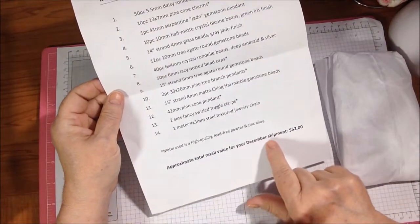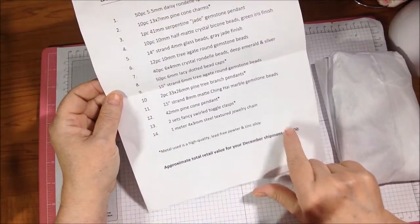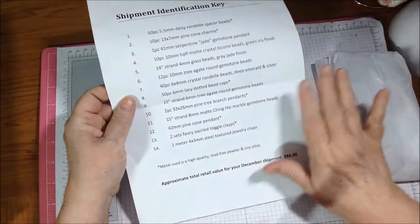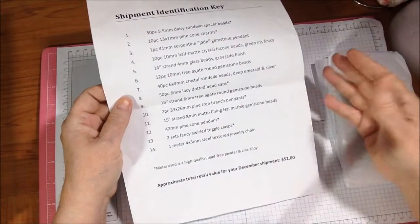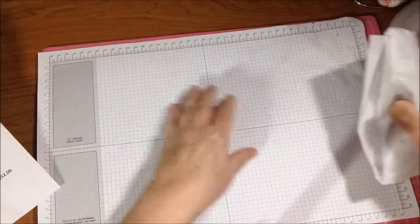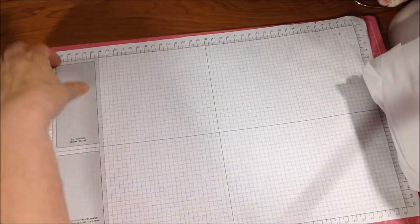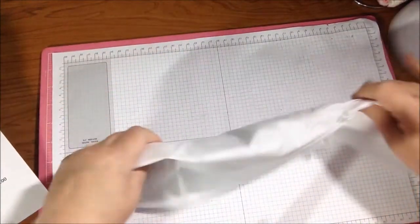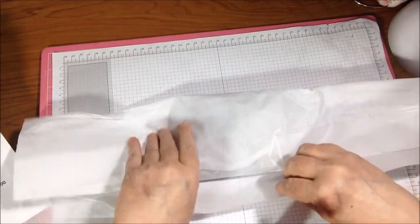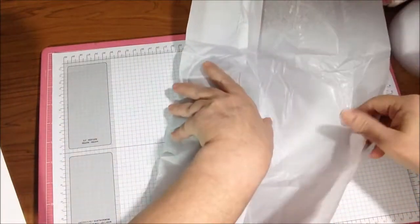Approximate total retail value for your December shipment is $52. And like I've said in the past, I have found that to be an appropriate approximation. I don't check it every month - I've checked it a few times and it was definitely valued at that or above, and I was using some wholesale or discounted prices in my estimates as well.